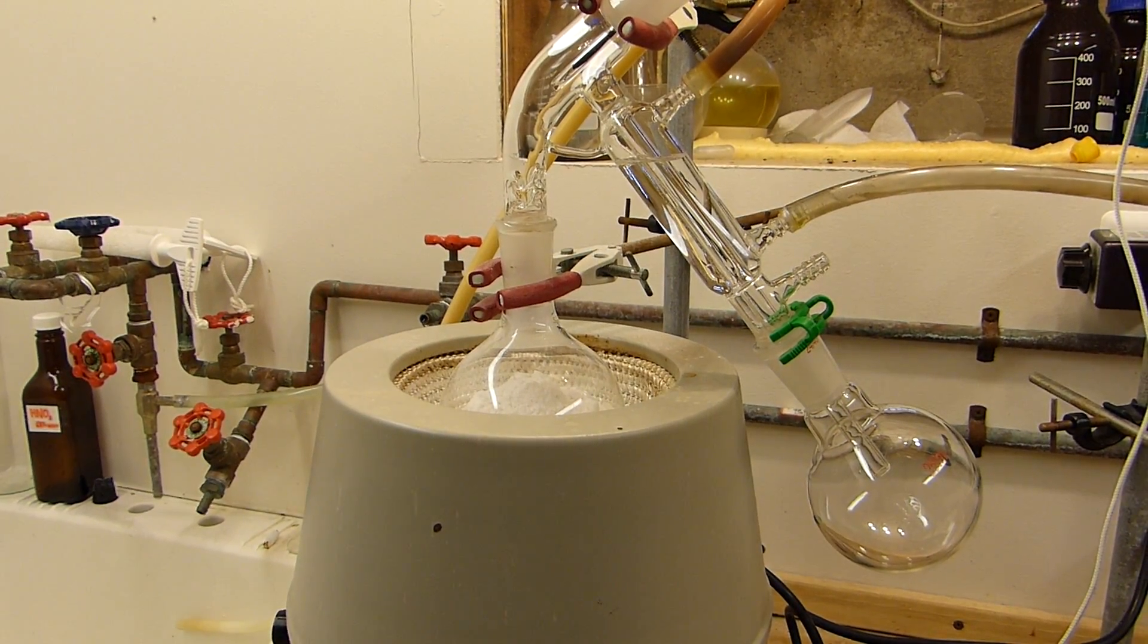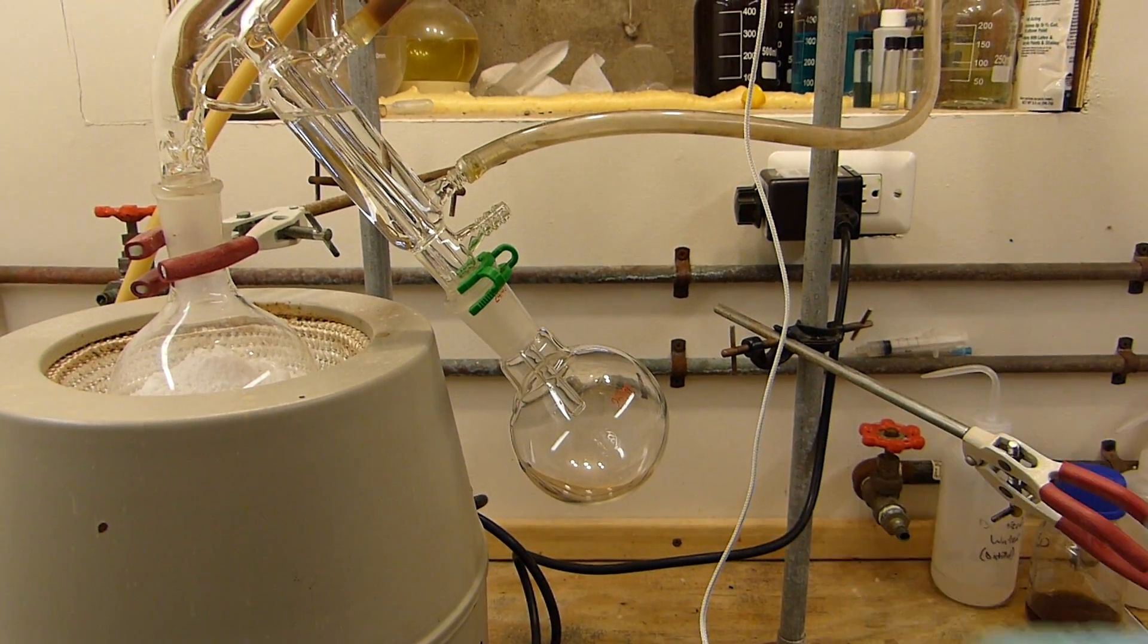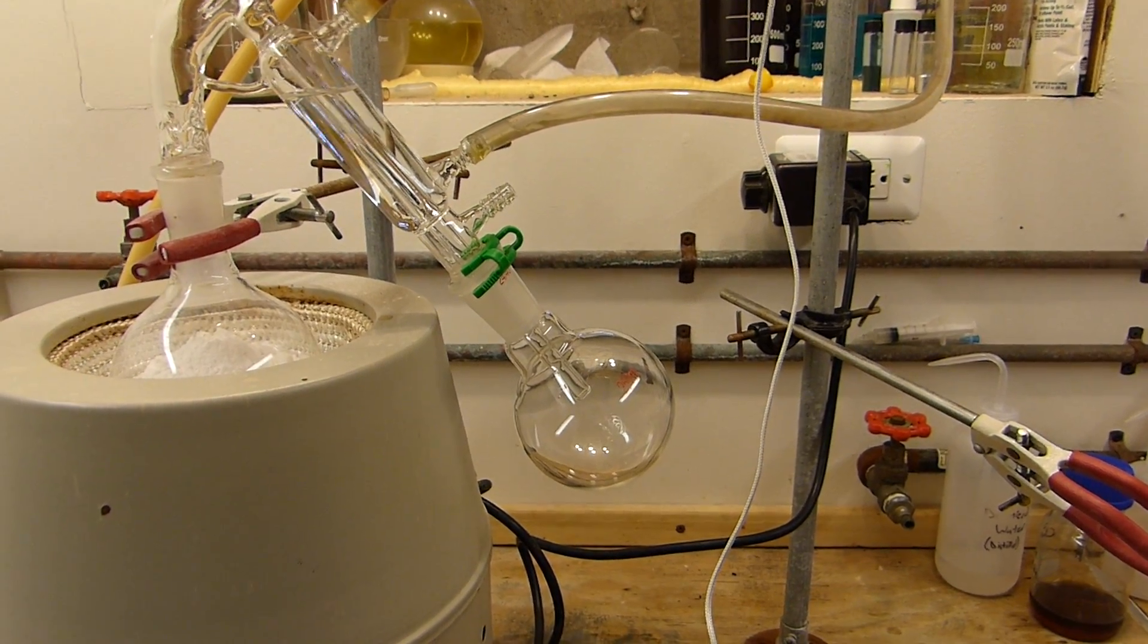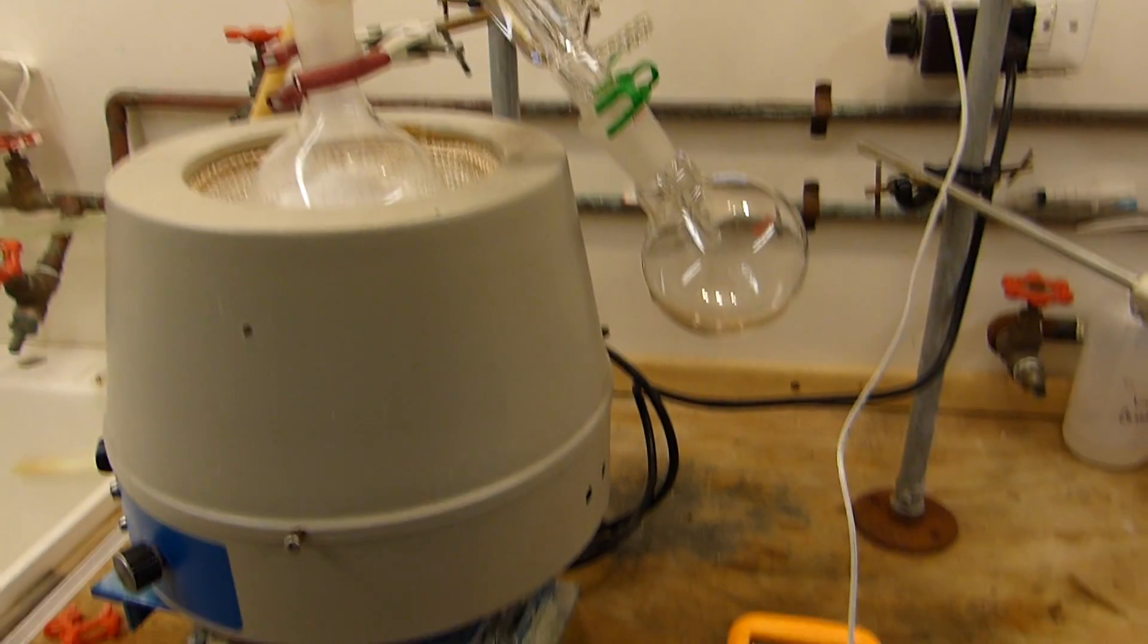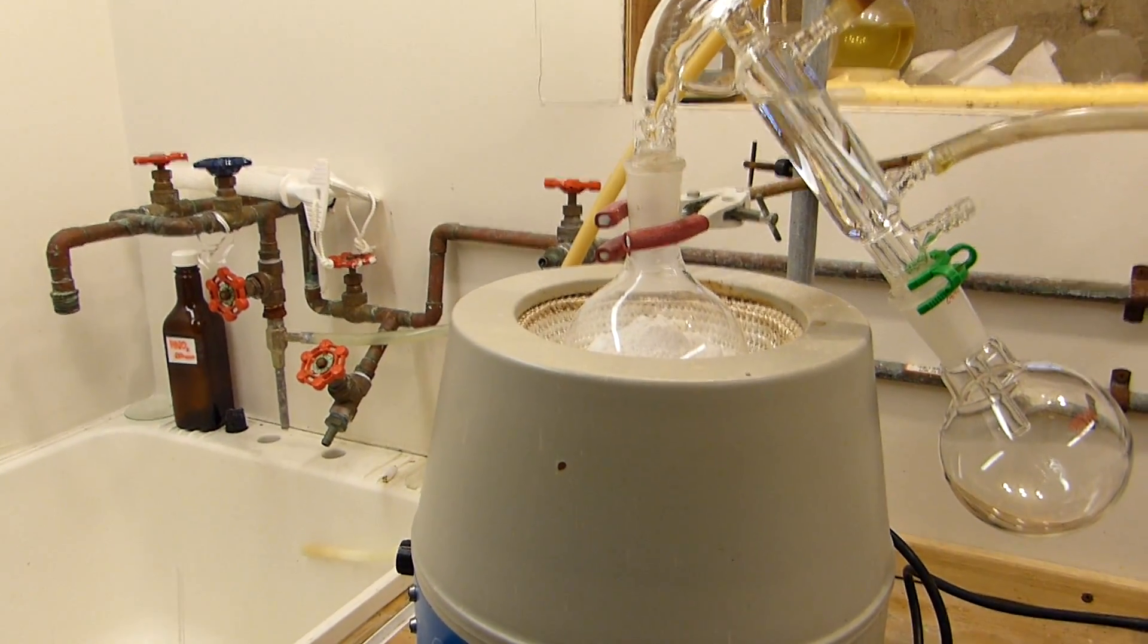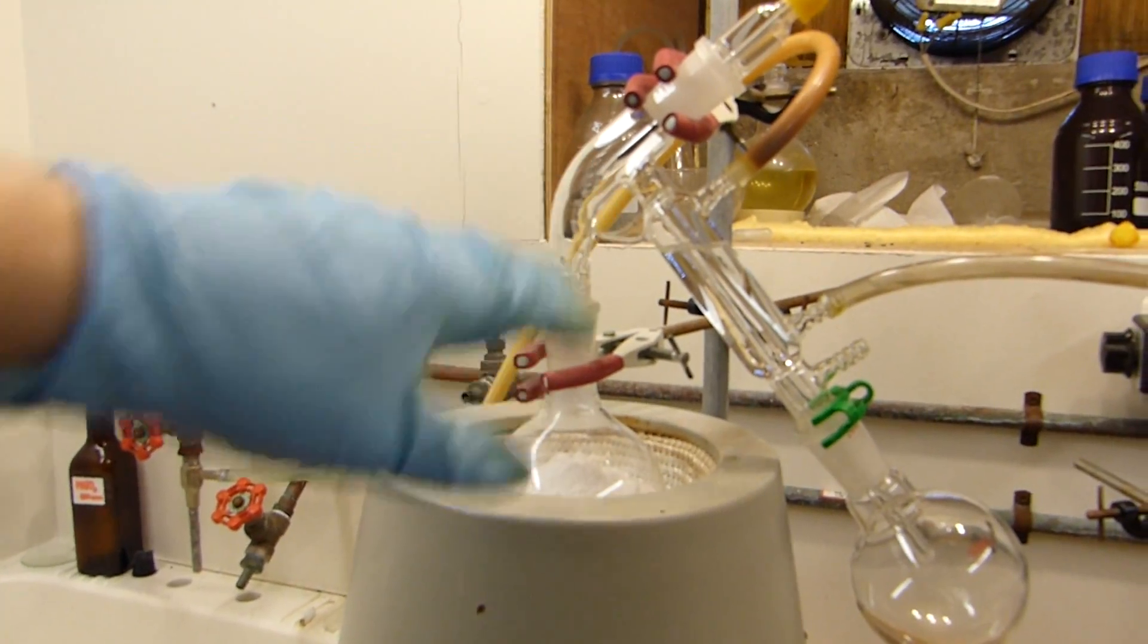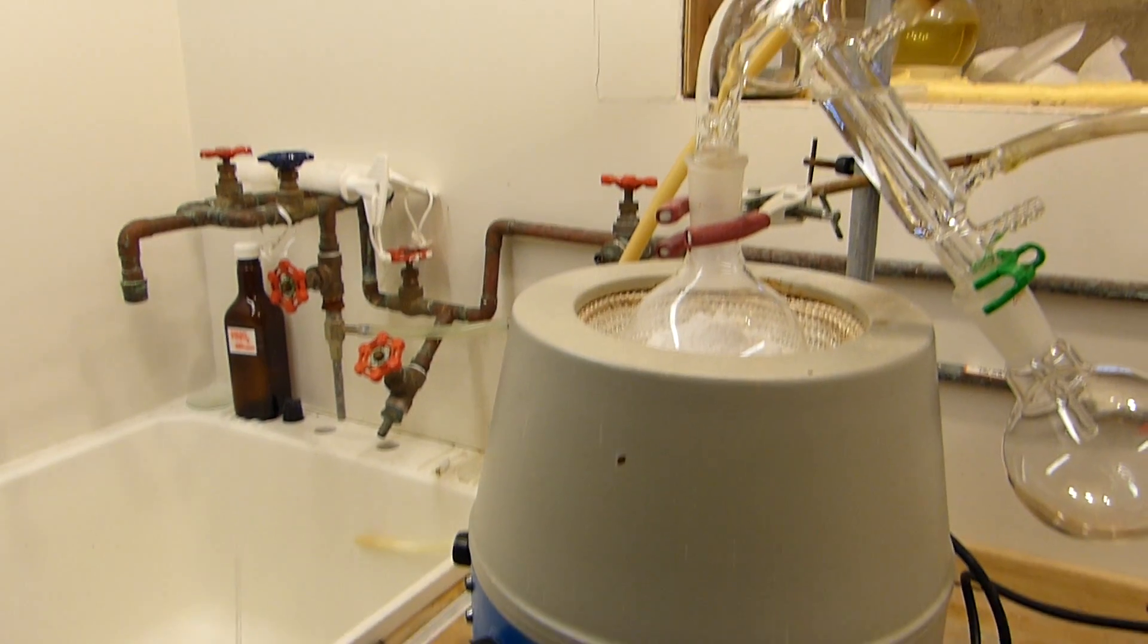As you can see, I've also hooked up a receiving flask here. This is a 250 ml round bottom, and that'll collect the phenol that's produced. So now all that's left to do is to turn on the thermocouple reader. There we go, 15.4°C in here. It's actually warming up now because we've got the warm water in there. And turn on the heat, and we'll begin to distill some phenol.